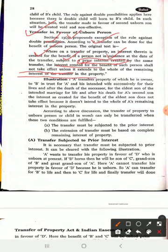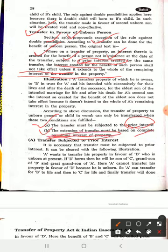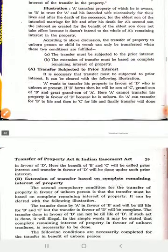The interest created for the benefit of such person shall not take effect unless it extends to the whole of the remaining interest. The property transfer will not be valid until you give complete remaining interest to the unborn person. Two conditions emerge here, which we will discuss one by one. The first is: transfer subject to the prior interest.